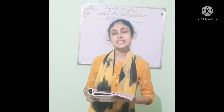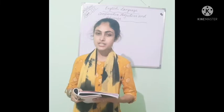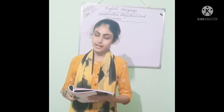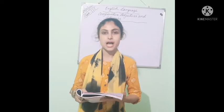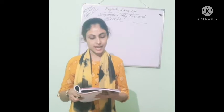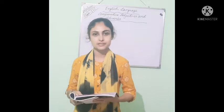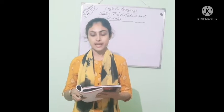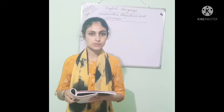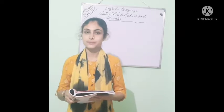For words that end with 'e', add only -r and than. Such as: the oranges are nicer than the lemons. Here, 'nice' is the word — it ends with 'e'. That's why we only need to add -r to nice. Nice becomes nicer in comparative degree.